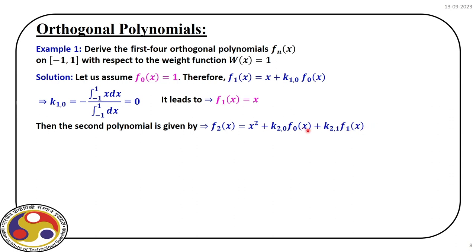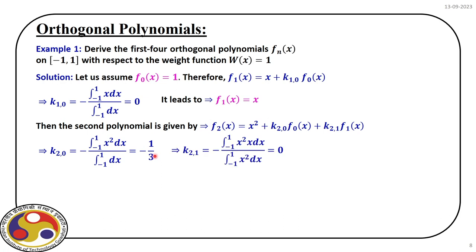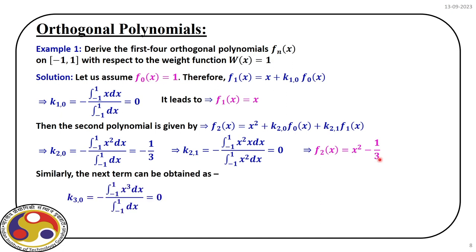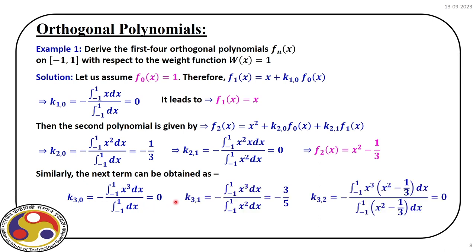We repeat for φ2(x) with leading term x², plus k₂₀·φ0(x) plus k₂₁·φ1(x). We already know φ1(x) and φ0(x). Evaluating k₂₀ gives −1/3, and k₂₁ = 0. So φ2(x) = x² − 1/3. Then for φ3(x), evaluating k₃₀ = 0, k₃₁ = −3/5, and k₃₂ = 0, giving φ3(x) = x³ − (3/5)x.